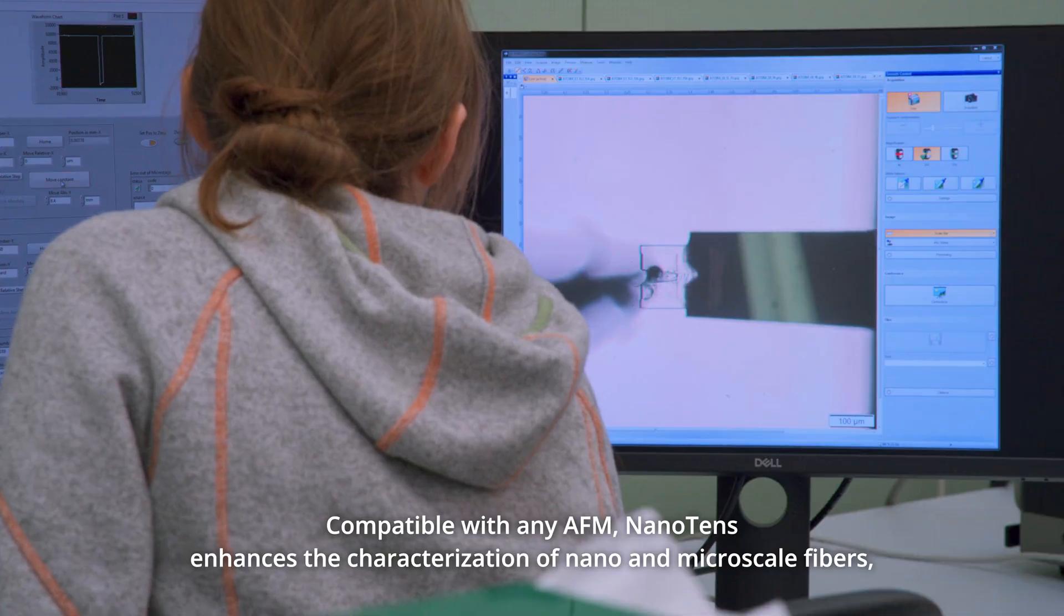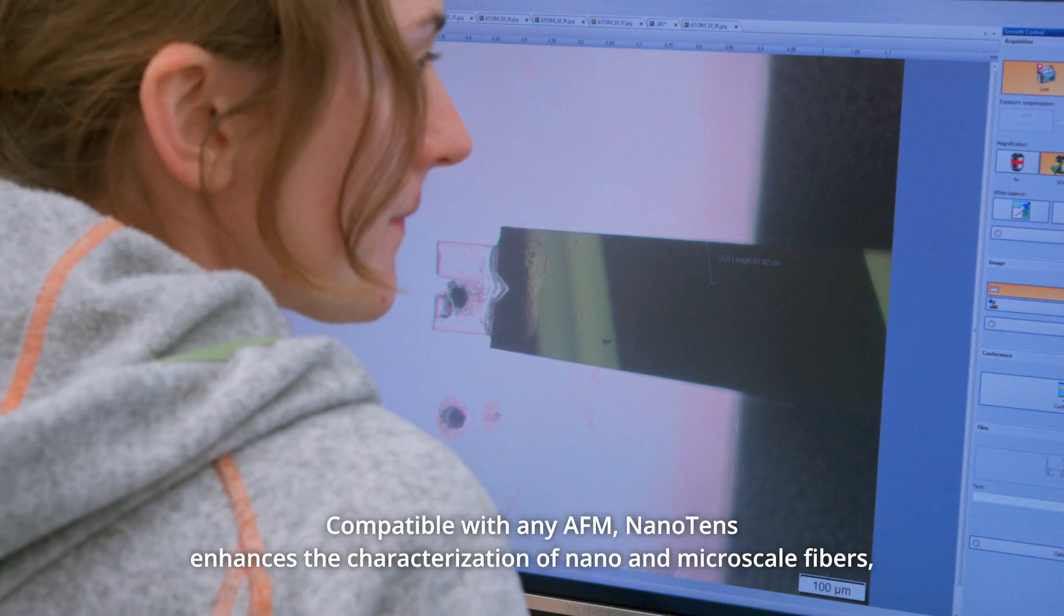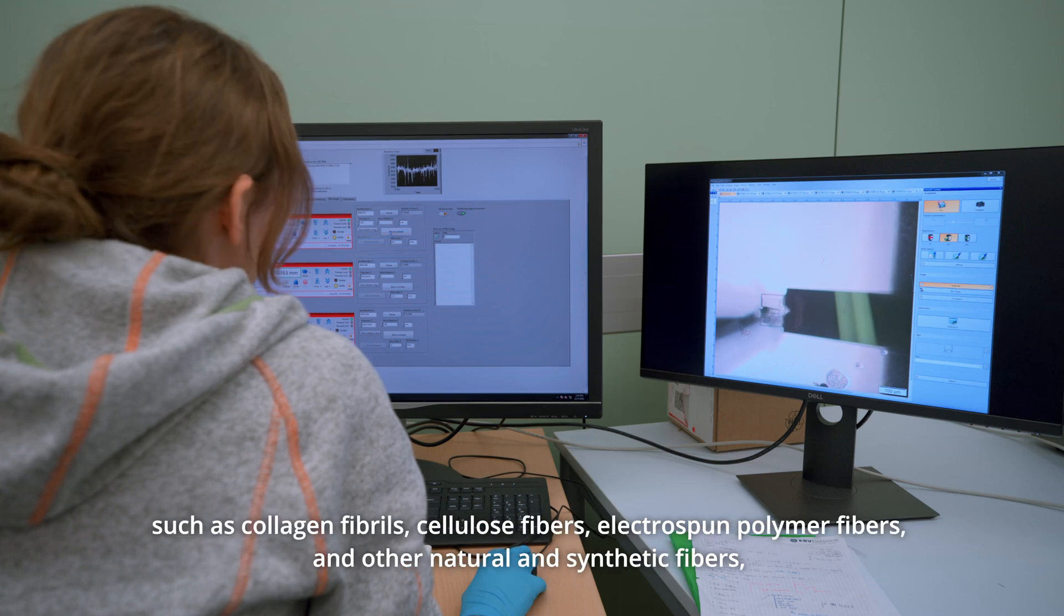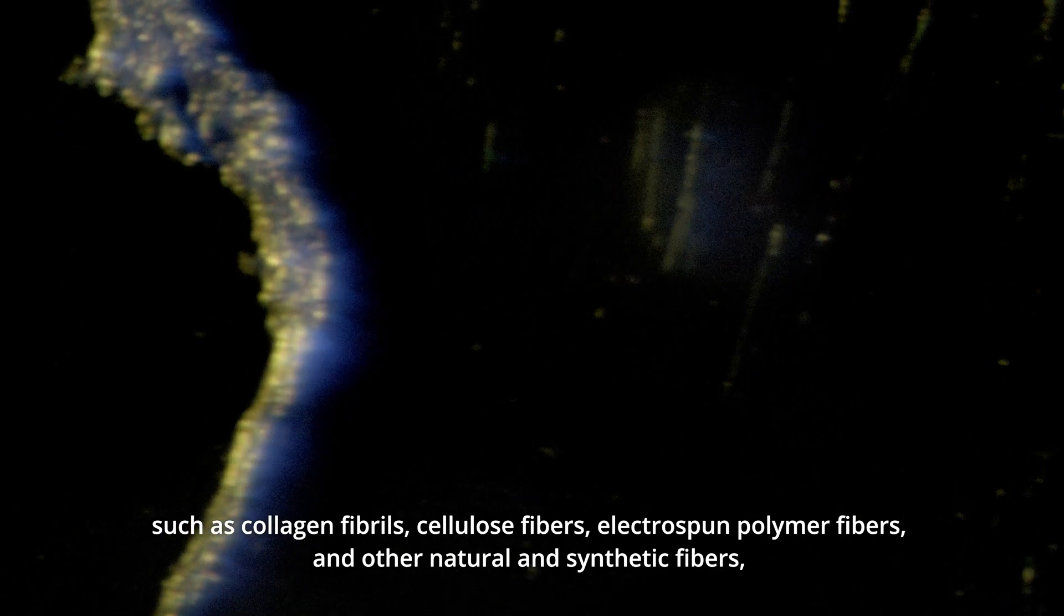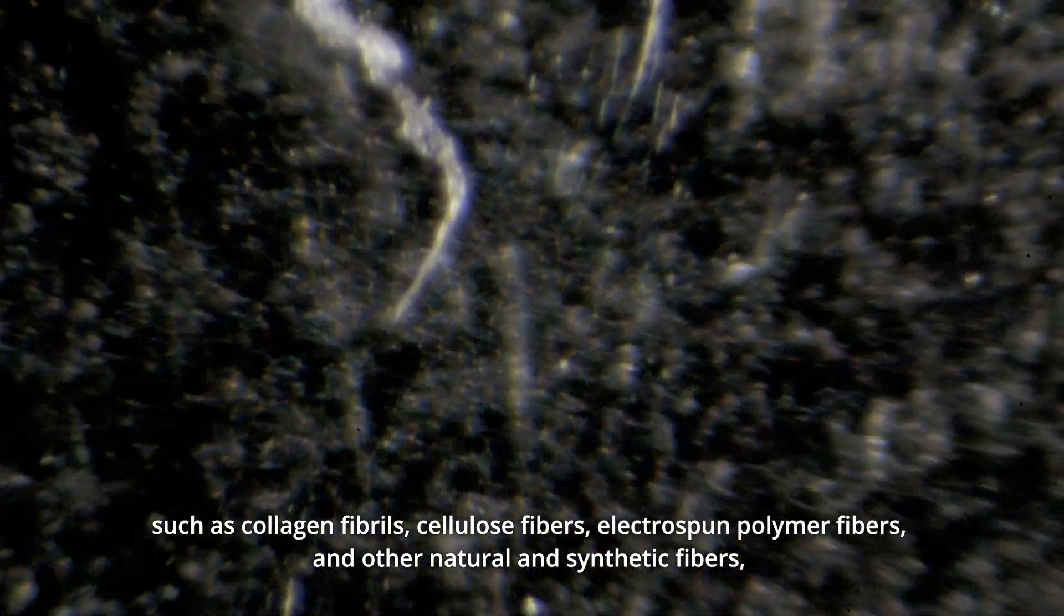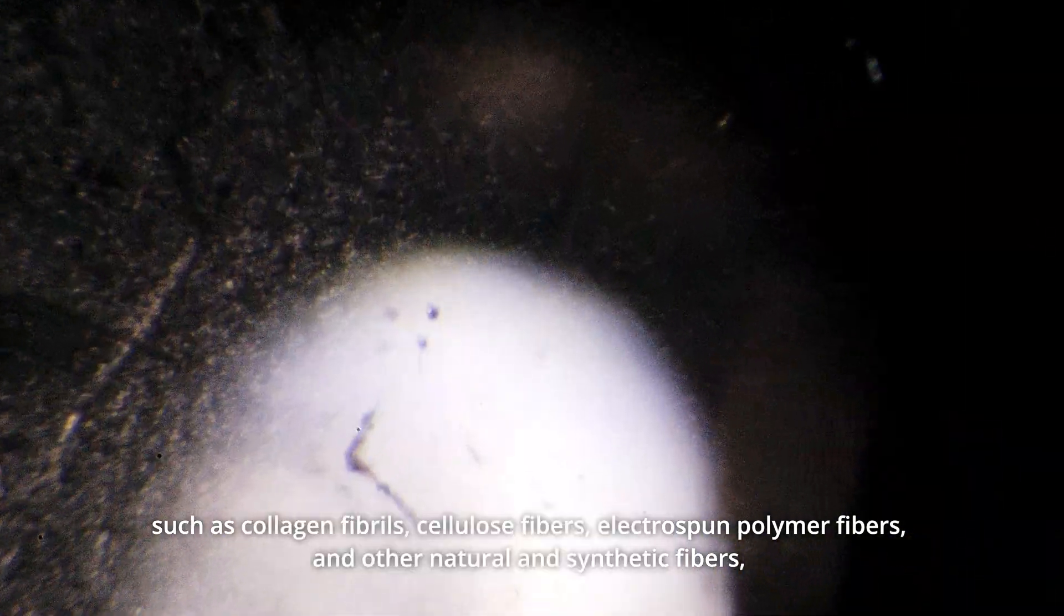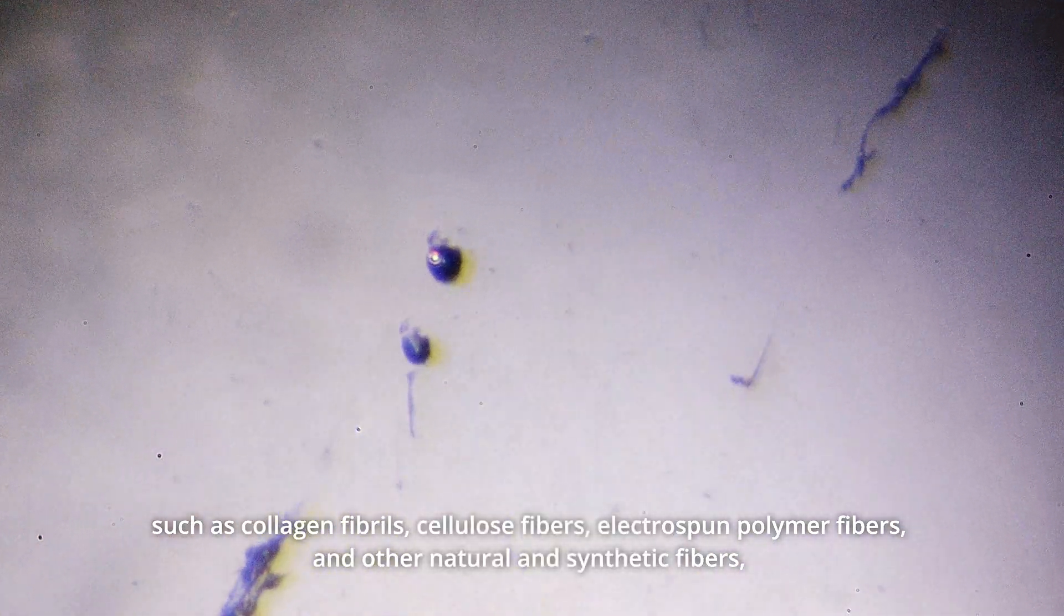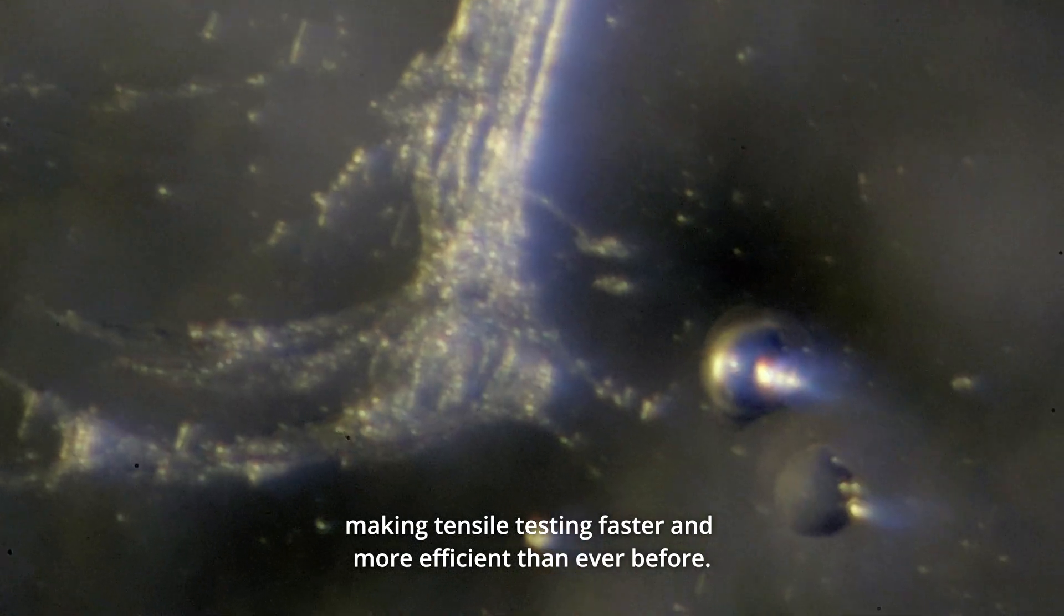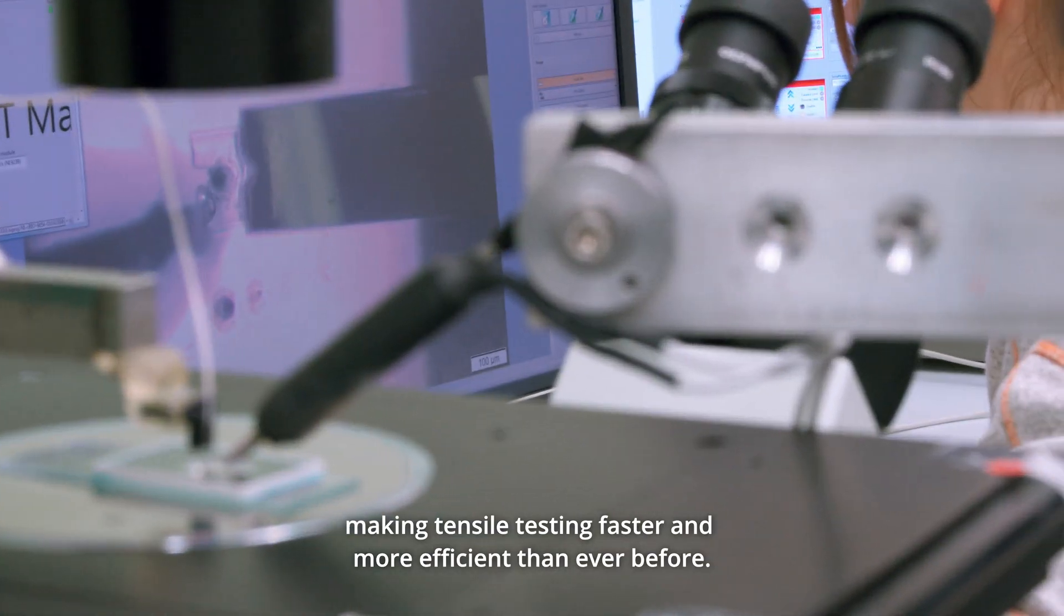NanoTens enhances the characterization of nano and microscale fibers, such as collagen fibrils, cellulose fibers, electrospun polymer fibers, and other natural and synthetic fibers, making tensile testing faster and more efficient than ever before.